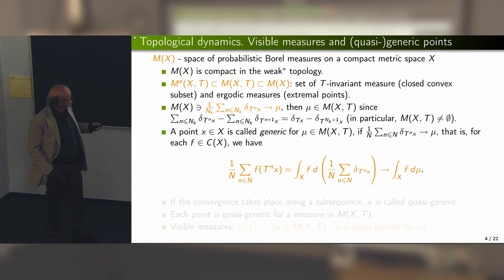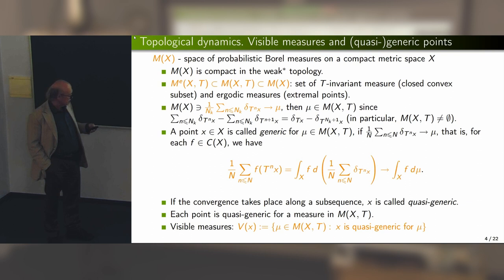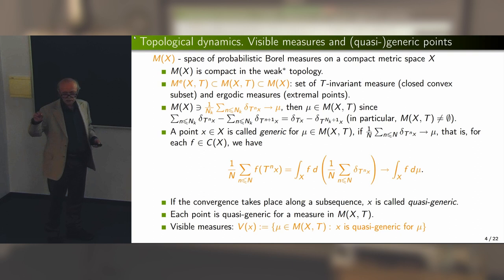Sometimes it happens that the whole sequence of empirical measures converges. In this case, we say that the point is generic for the limit measure. Please remember this notion — it will be used. In general, if I take any point X, I obtain possibly many limits, and then we talk about quasi-genericity. The set of all measures visible from a point X are called the visible measures from X.